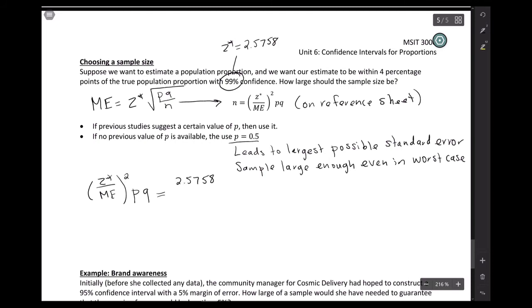For margin of error, we just see what margin of error we wanted. We want it within four percentage points. And since this is written in terms of proportions, the formulas in terms of proportions, we'll do 0.04 here. So that's the margin of error, 0.04.